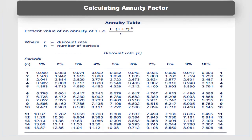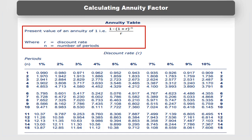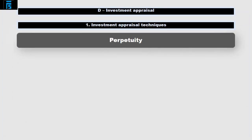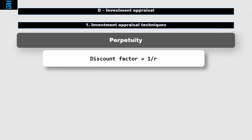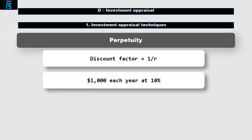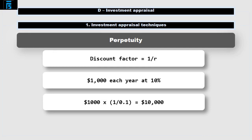Occasionally, you might need to use an annuity factor that's not given to you in tables. The formula to calculate an annuity factor is shown above the tables in the exam. It is possible to have an annuity that actually never comes to an end. This is known as a perpetuity. The discount factor for a perpetuity is simply 1 over R. For example, the present value of $1,000 each year starting next year forever, with a 10% per annum required rate of return, would be $1,000 multiplied by 1 over 0.1, equals $10,000.